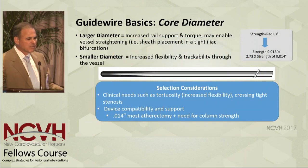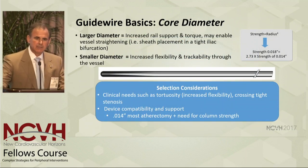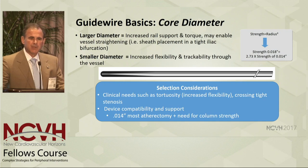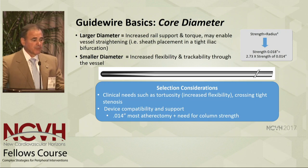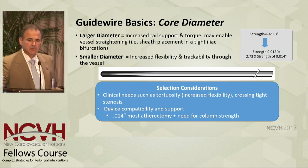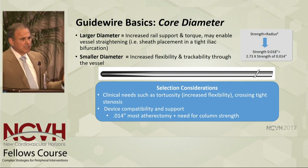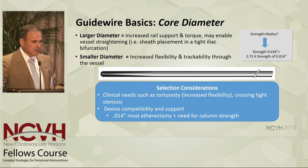In the peripheral space, we use 035, 018, and 014 wires. The larger the diameter of the wire, assuming it's made of the same material, the greater will be its axial support and its torque. It's a direct relationship to the radius — in fact, it's related to the fourth power of the radius. And this may enable vessel straightening if we need to come around very tortuous arcs.